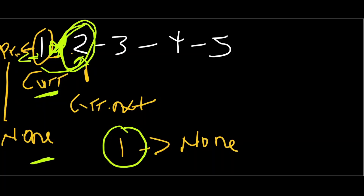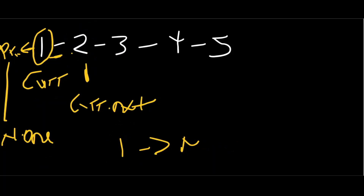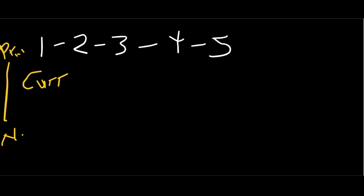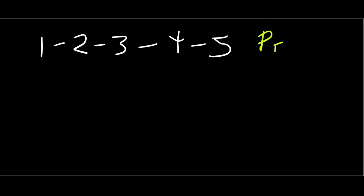I realize this might be a bit confusing, so I'm going to start over. We are declaring a previous pointer to reference what we had previously. Starting out, we have nothing previously, so it points to none. To reverse this linked list, we want to break off this pointer — we don't want it to point to the next, we want it to point to the previous. When we break off this link, we are losing access to the rest of the list, and we do not want that.